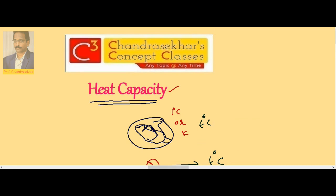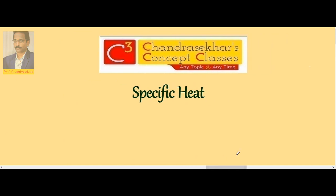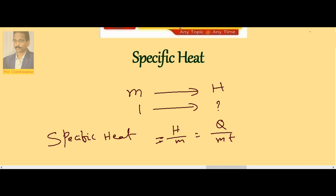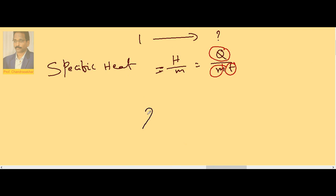Now if we consider mass as well, that quantity is called specific heat. For a substance of mass M, let us say heat capacity is H. For unit mass, the heat capacity is H by M. This is called specific heat or specific heat capacity, denoted by C. It is the heat capacity of unit mass. Since H equals Q by T, we can write specific heat S as Q divided by M times T — the heat required to raise the temperature of unit mass through 1 degree centigrade or 1 Kelvin. So S equals Q divided by MT.